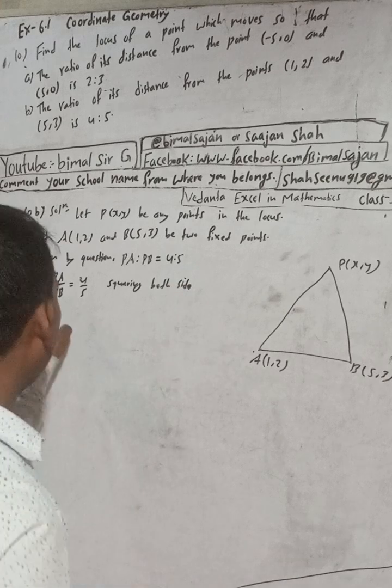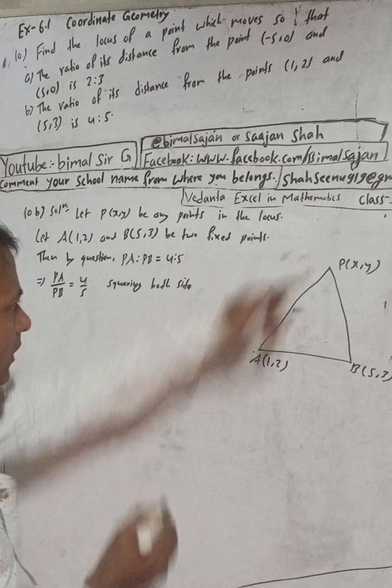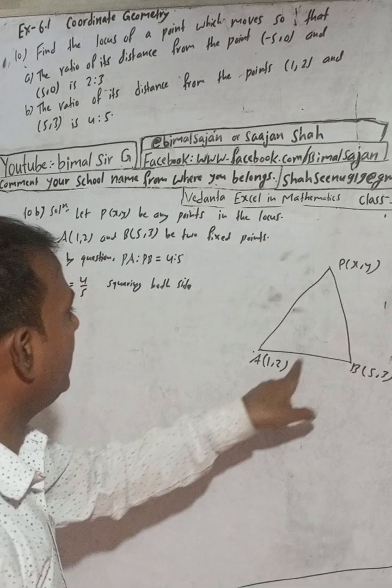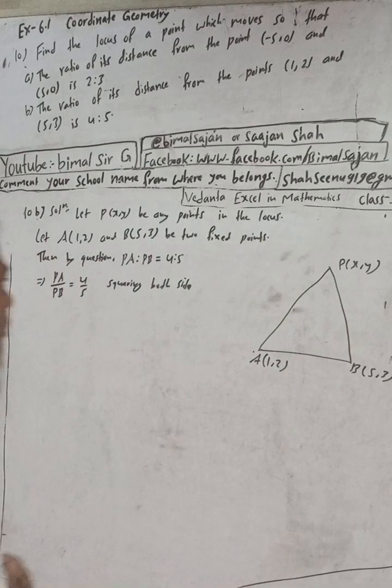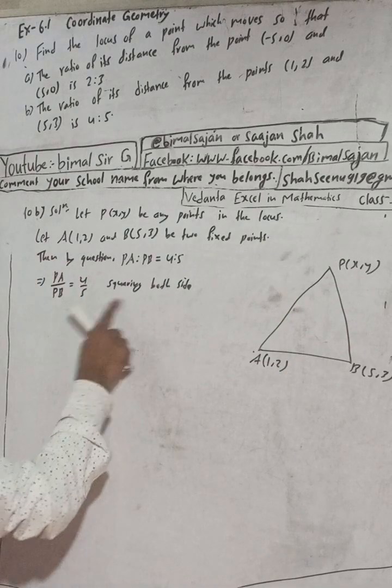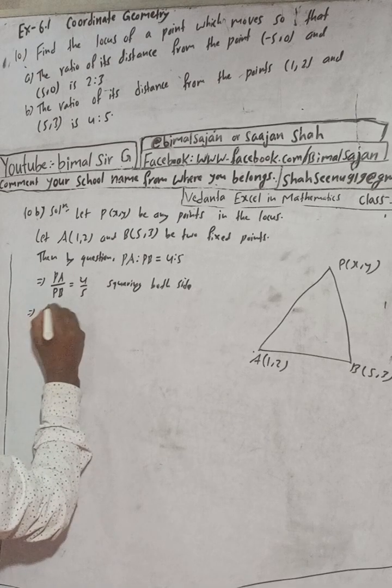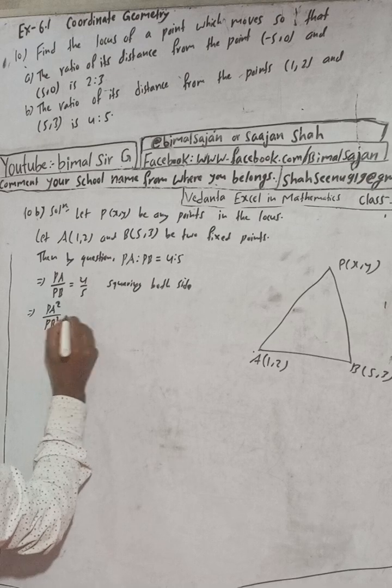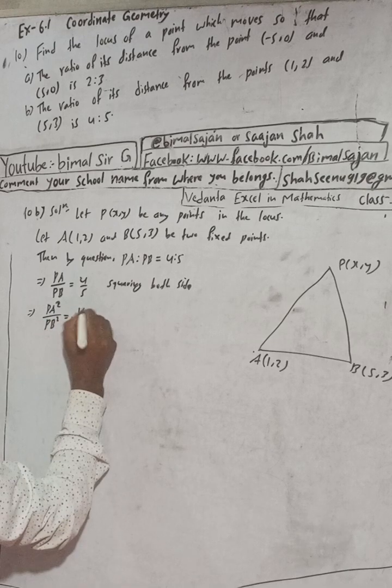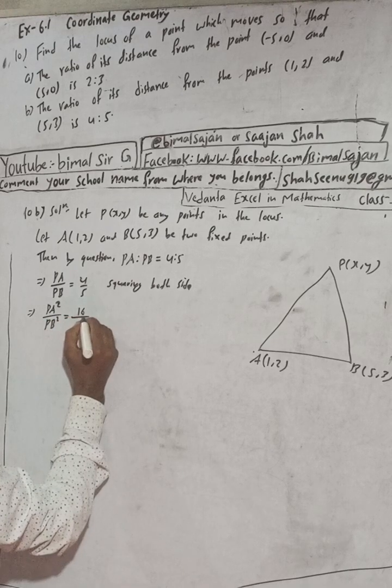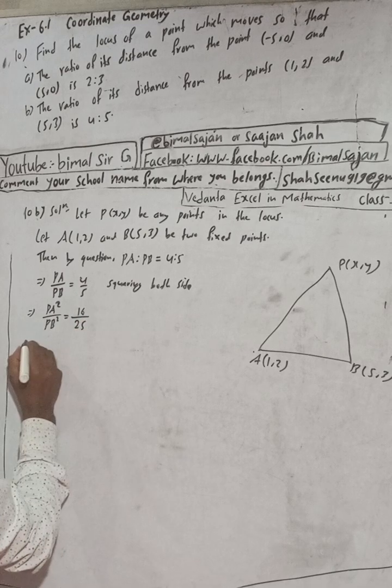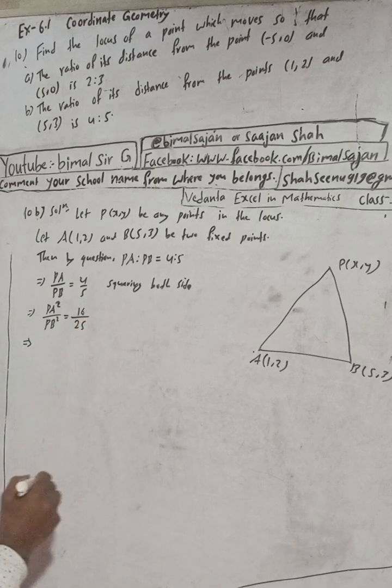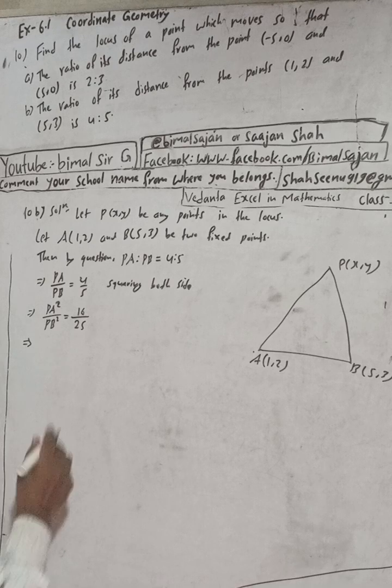PA distance means root of (x-1)² + (y-2)². To remove the root, we are squaring both sides. Now we can write PA²/PB² = 16/25. This implies that cross-multiplying, 25PA² = 16PB².